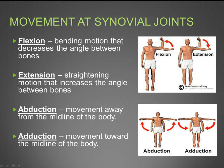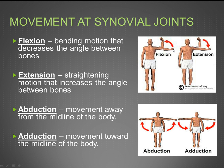Next are the movements of synovial joints. First is flexion, a bending motion that decreases the angle between the bones. For example, your arm starts at an extended position and then flexes up — think of flexing your biceps, making it shorter and decreasing the angle.